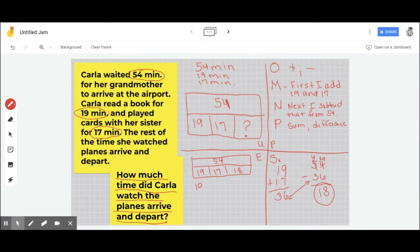Well, the easiest way to do this is just add my bottom numbers to make sure that it equals 54. So 19 plus 17 plus 18.